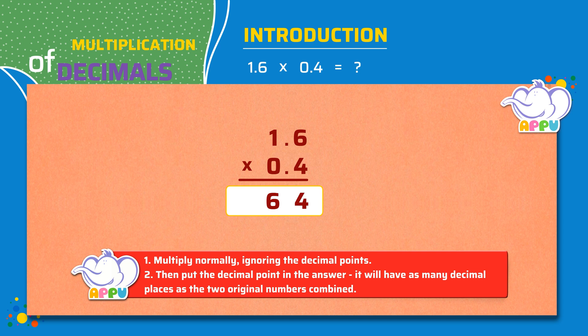Then count the digits after the decimal point of both the numbers. Here it is 2. 1 digit after decimal point of first number and 1 digit after decimal point of second number. We place the decimal point after 2 digits counting from the right. The answer is 0.64. So, 1.6 times 0.4 equals 0.64.